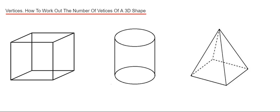Hi guys, welcome back! This is Maths 3000. Today we're going to look at working out the number of vertices on a 3D shape. Vertices are the same as the corners—the sharp bits of the 3D shape.